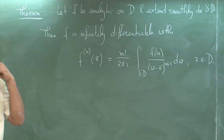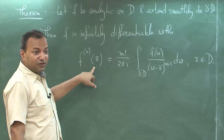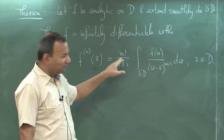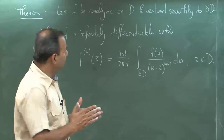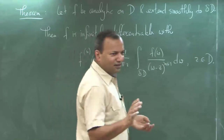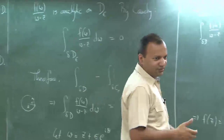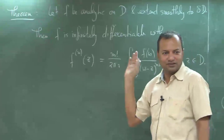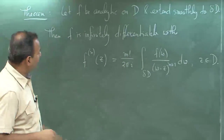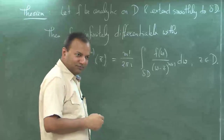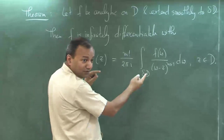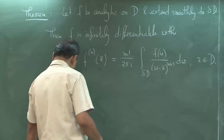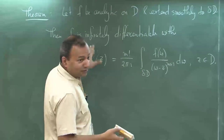If f is analytic then it is infinitely differentiable and the m-th derivative is given by an integral formula. The constants are a little suspect but we will figure them out as we derive this. This is remarkable because in real analysis a differentiable function does not have to be second, third, or fourth order differentiable. Here, if it is first-order differentiable it is differentiable to all orders, and there is a nice formula for calculating each derivative using an integral.